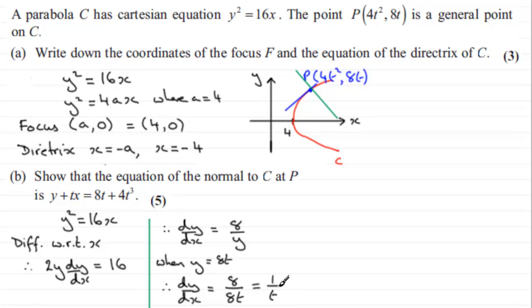Okay, so let's just move on then. And we now work out the gradient of the normal. So we can come down here for the next part. So, we've got the gradient of the normal, therefore gradient of normal. It's going to be the negative reciprocal then of this value here. So, we say the gradient of the normal at P is going to be minus t.